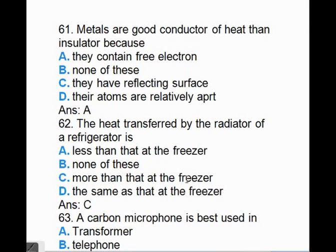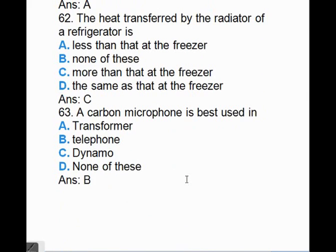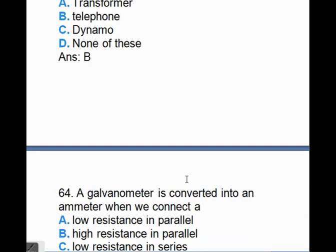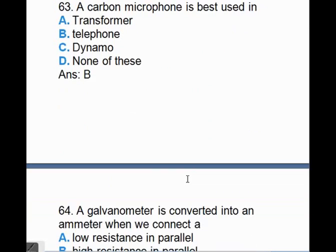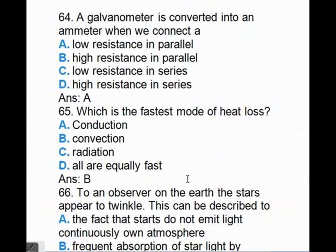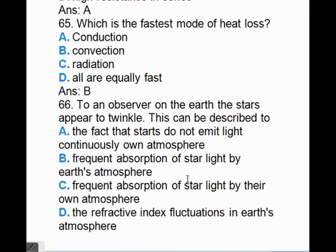Metals are good conductors of heat than insulators because they contain free electrons. The answer is A. The heat transferred by a radiator of a refrigerator, answer is C, more than that at the freezer. A carbon microphone is best used in B, telephone. A galvanometer is converted into an ammeter when we connect a low resistance in parallel. Which is the fastest mode of heat loss? Answer is B, convection.